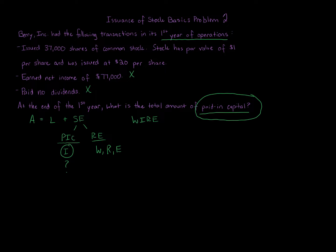What about earned net income? That would go to retained earnings, so we can ignore that. The next one though—issued 37,000 shares of common stock, stock has a par value of one dollar per share and was issued at twenty dollars per share. That is relevant.